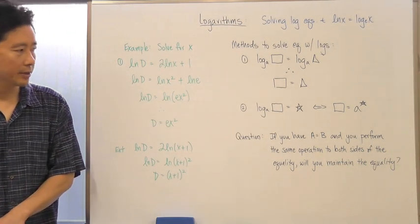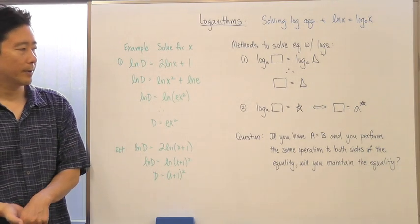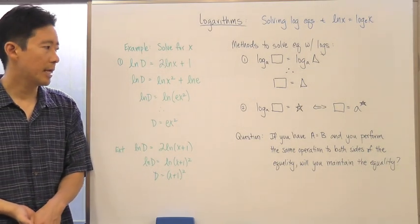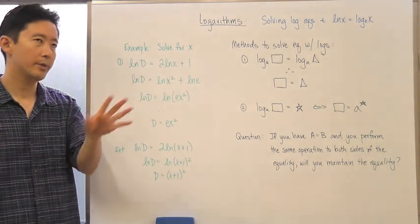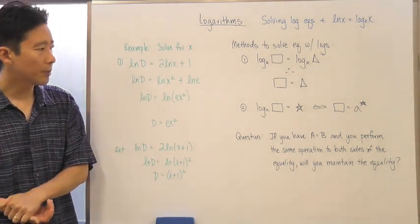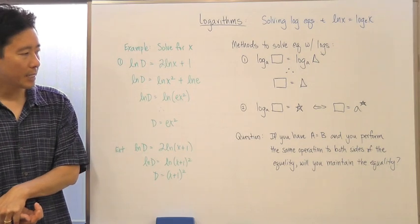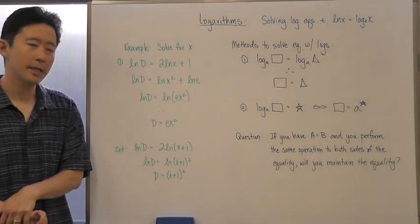Okay, now this is a question that I want you to go ahead and think about for class. If you have, let's say for example, an equation a is equal to b, it could be whatever you want it to be, a is whatever you want it to be, b is whatever you want it to be, so long as you know that they're equal, and you perform the same operation to both sides of the equality, will you maintain the equality?